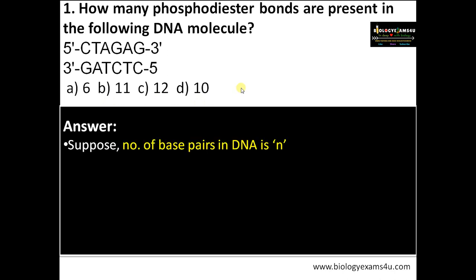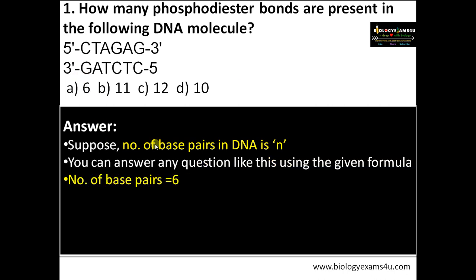The first step in finding out the number of phosphodiester bonds is to find out the number of base pairs. Suppose the number of base pairs in the DNA molecule is n. Here the number of base pairs is 6, as you can see: C and G make one base pair, T and A is the second base pair, A and T the third, G and C — like that we have 6 base pairs.